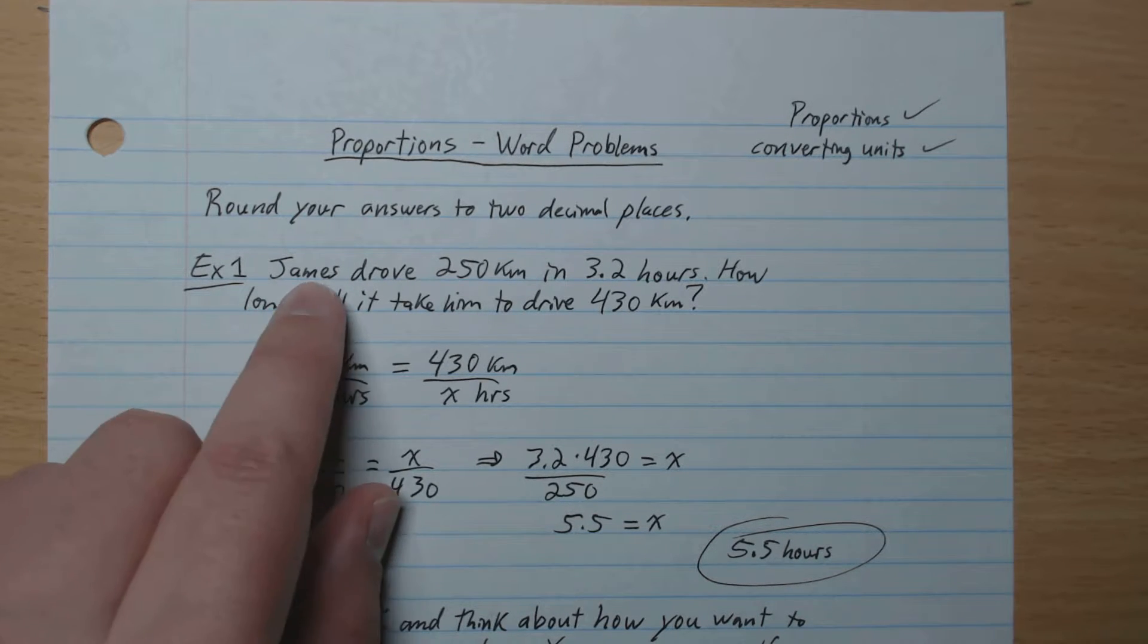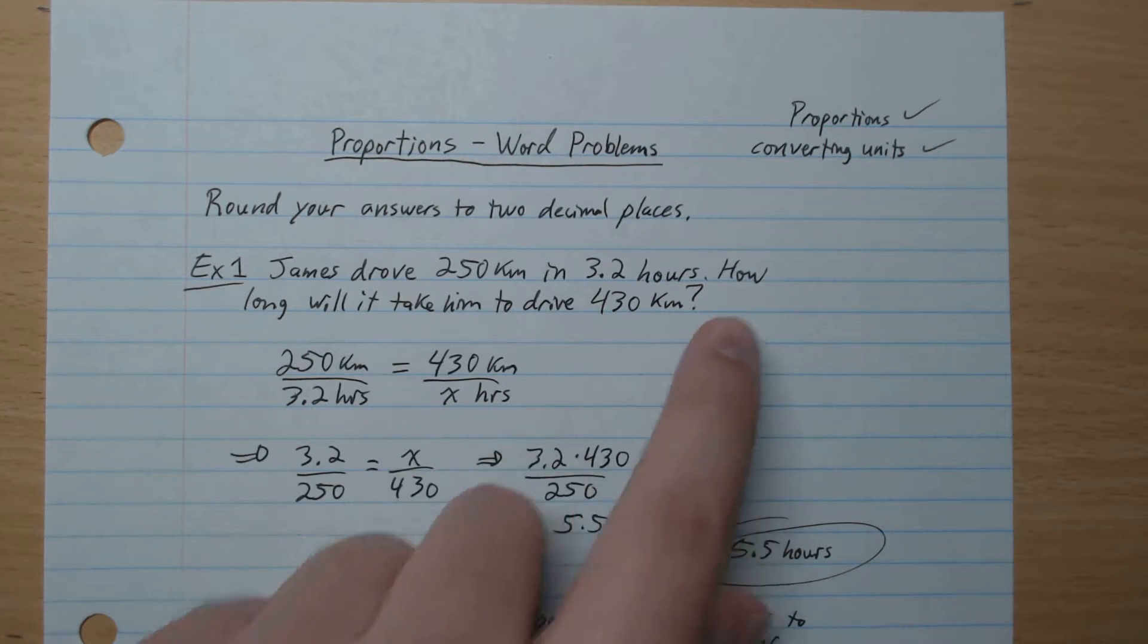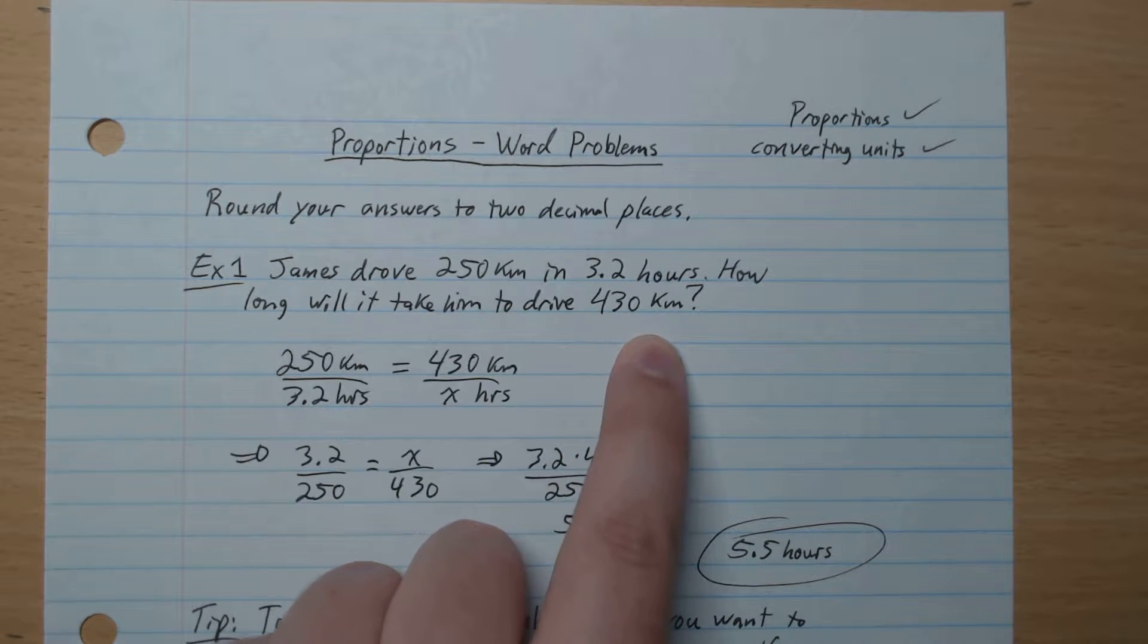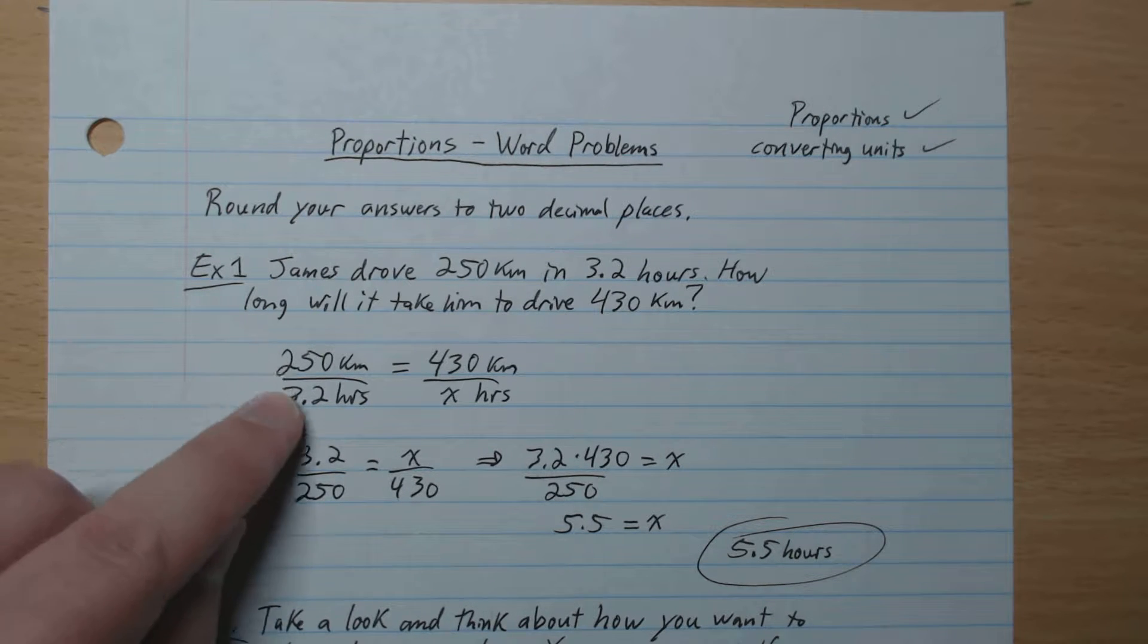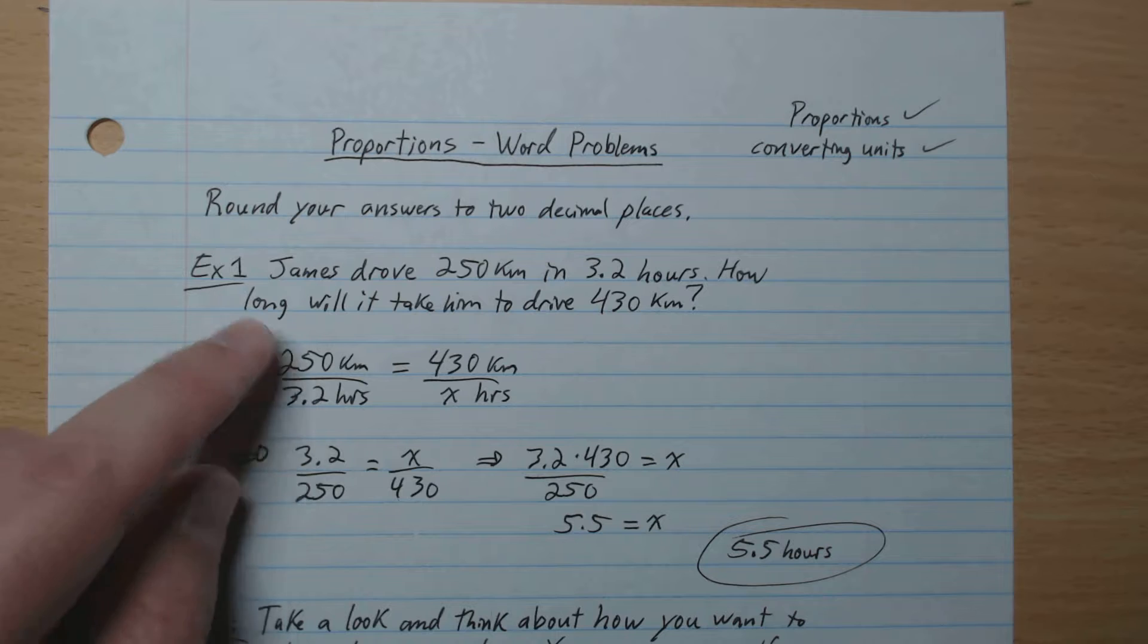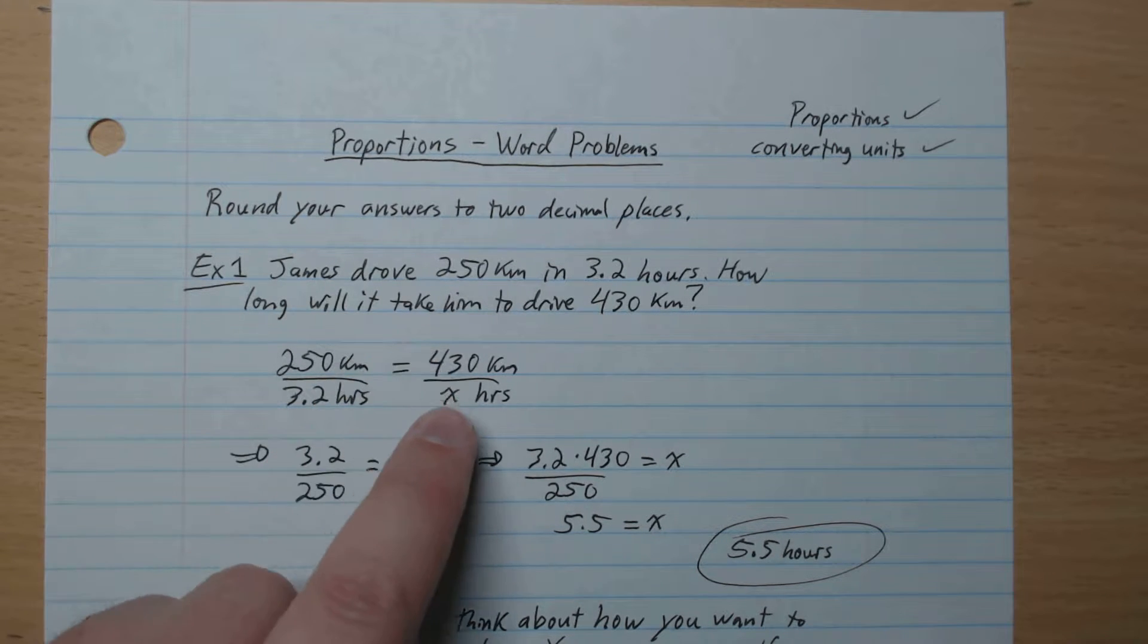Example one: James drove 250 kilometers in 3.2 hours. How long will it take him to drive 430 kilometers? What we have is our first ratio of 250 kilometers for 3.2 hours, and this is going to be the same as 430 kilometers in a certain amount of hours, which we'll call x.